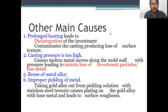Other causes include prolonged heating, which can lead to disintegration of the investment and contaminate the casting, producing loss of surface structure. Second is casting pressure being too high, which can abrade the mould wall, leading to minor loss of investment particles and fine details. Finally, reuse of the metal alloy and improper pickling — improper pickling is basically associated with the gold alloy and due to handling with silver or stainless steel tweezers.